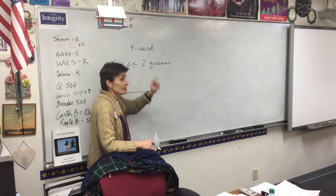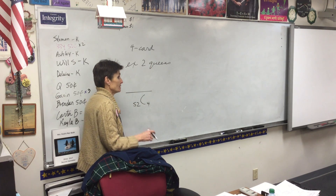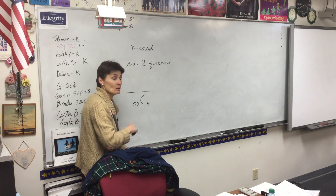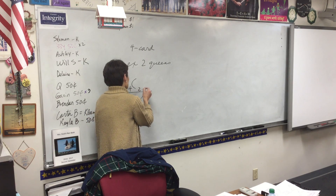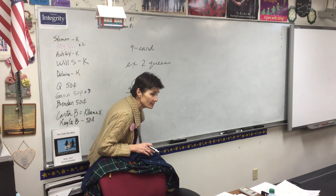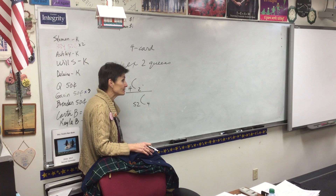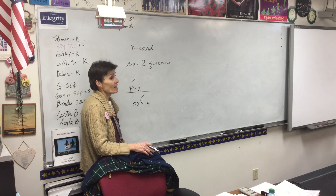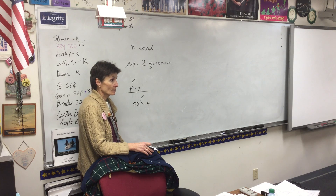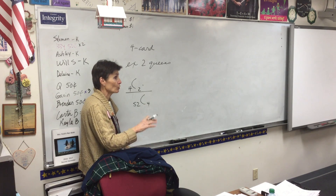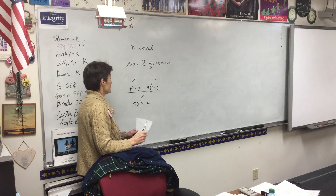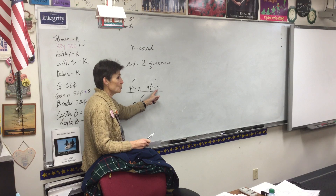Now, what do I want in the numerator? I need to get exactly two queens. That means I have to get two queens and then two of something else — two other cards. How many queens are in the deck? Four. How many do I want? Two. There are my two queens. Notice I put a times sign, because I want two queens AND two other cards. When I say 'and,' it's a multiply. How many other cards are there in the deck that are not queens? 48. Right — 52 cards, four of them are queens, so there are 48 that aren't queens. Of those 48, how many am I picking? Two. So my numerator is two out of the queen pile and two out of the not-queen pile.